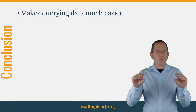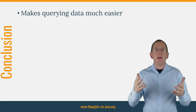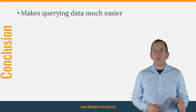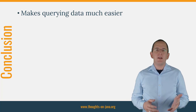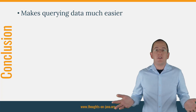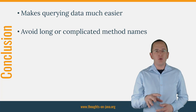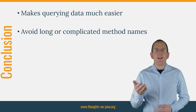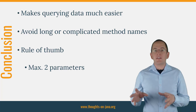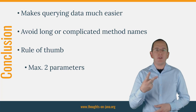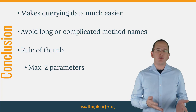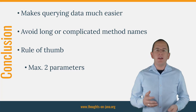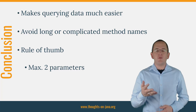Spring Data JPA provides a relatively small usability layer on top of JPA, but it offers several features that make working with JPA much easier. The derived query feature shown in this tutorial is an excellent example of that. As a rule of thumb, as long as your query doesn't need more than two parameters, a derived query is the easiest approach. If your query requires more than two parameters, or you can't express it in a short and simple method name, you should define the query yourself. I will show you how to do that in one of my next videos.